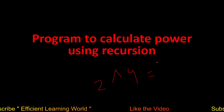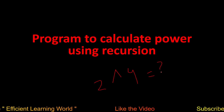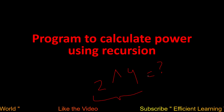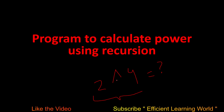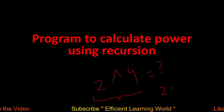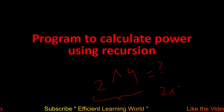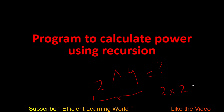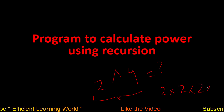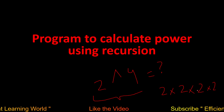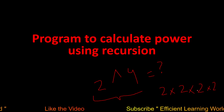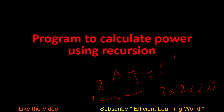So 2 raised to power 4 — how do we calculate the result? Power 4 means I want to multiply 2 by itself 4 times: 2×2=4, 4×2=8, 8×2=16. So the answer is 16.